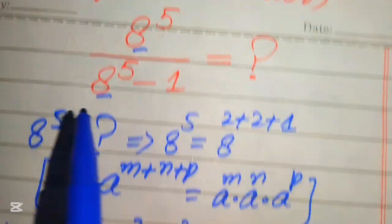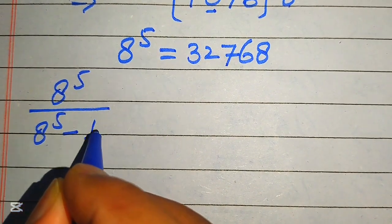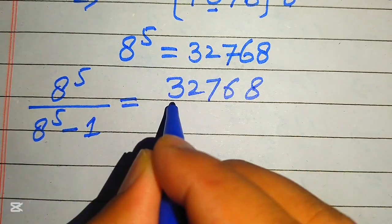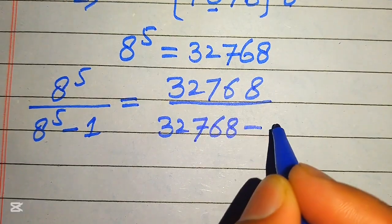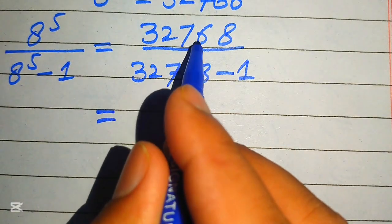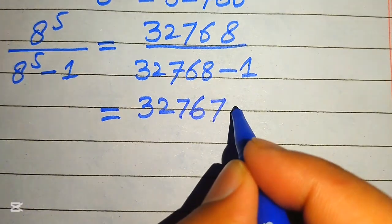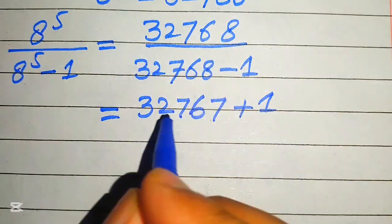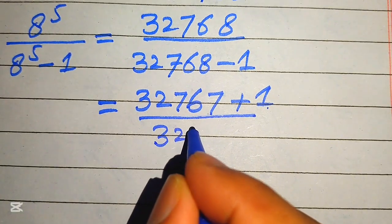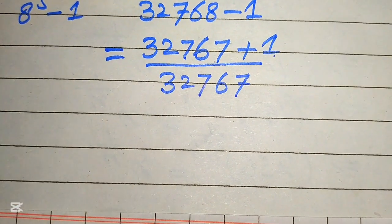We now substitute back: 8^5 divided by 8^5 minus 1 becomes 32,768 divided by 32,768 minus 1. We rewrite 32,768 as 32,767 plus 1, so the denominator becomes 32,767.